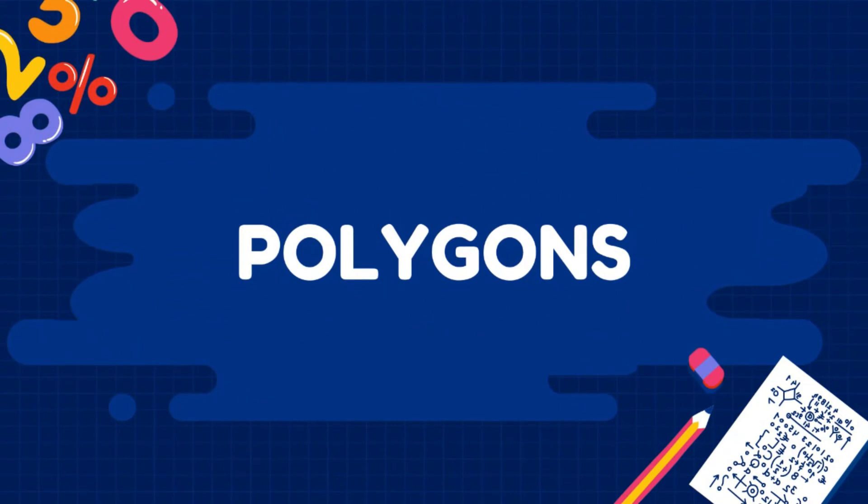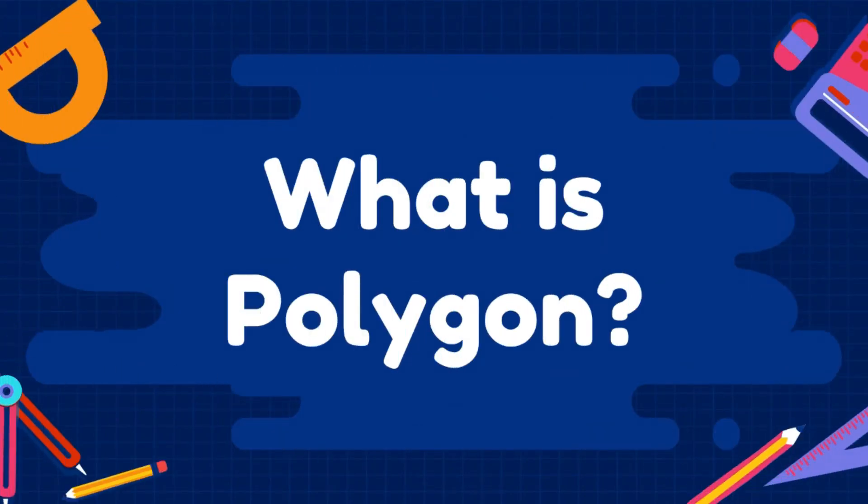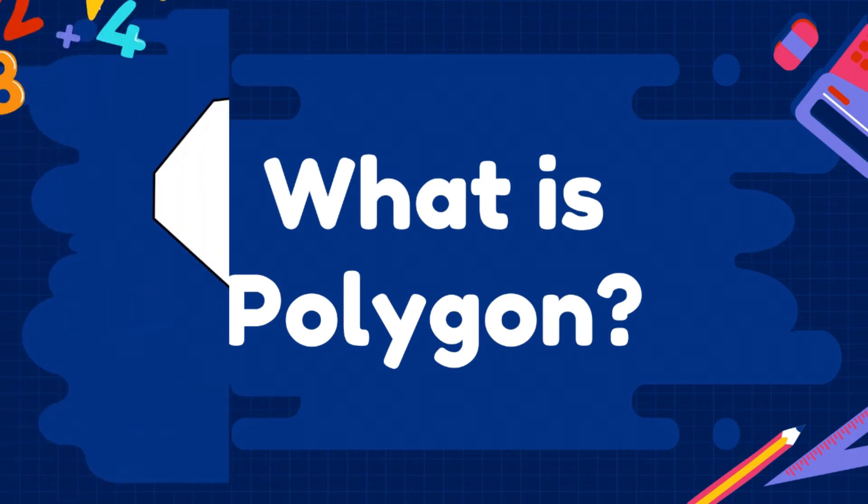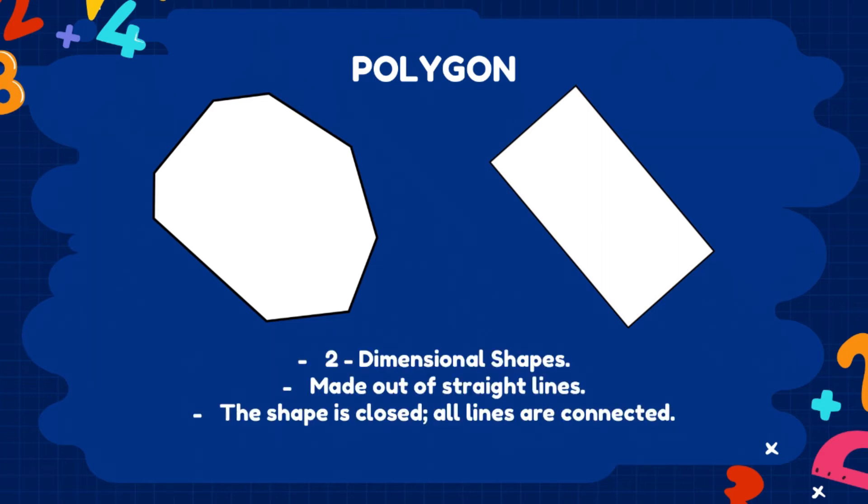Now let us proceed to the types of a 2D figure. We have first the polygons. What do you think is a polygon? Based from the image you are seeing, what do you think is a polygon? Polygons are two-dimensional shapes. They are made of straight lines and the shape is closed, meaning all the lines are connected.